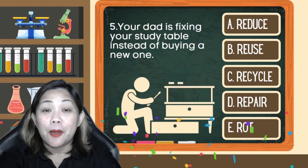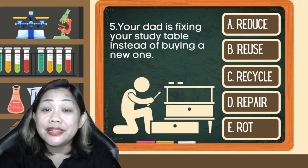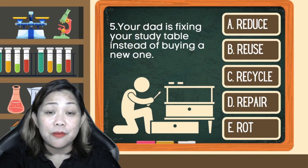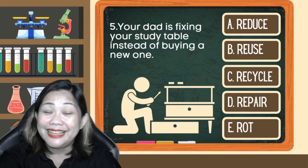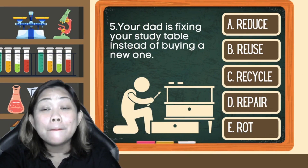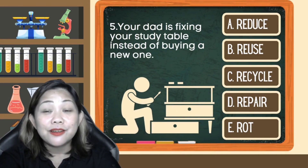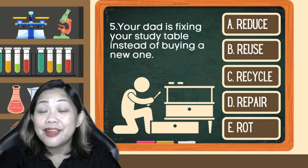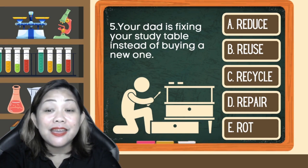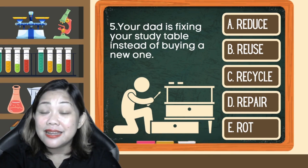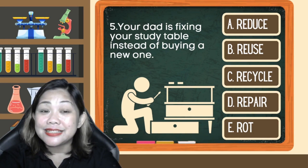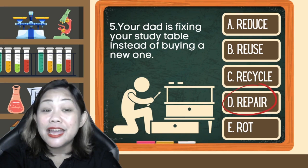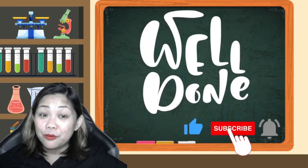Number 5: Your dad is fixing your study table instead of buying a new one. Is it A. Reduce, B. Reuse, C. Recycle, D. Repair, or E. Rot? The correct answer is D. Repair. Well done!